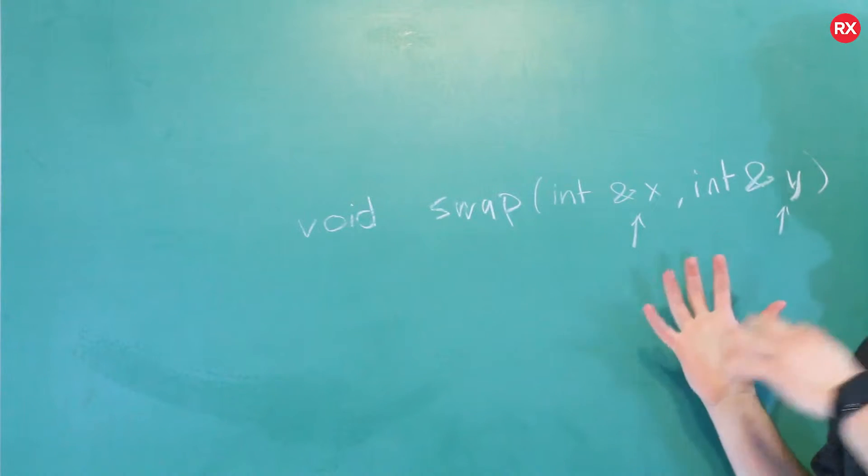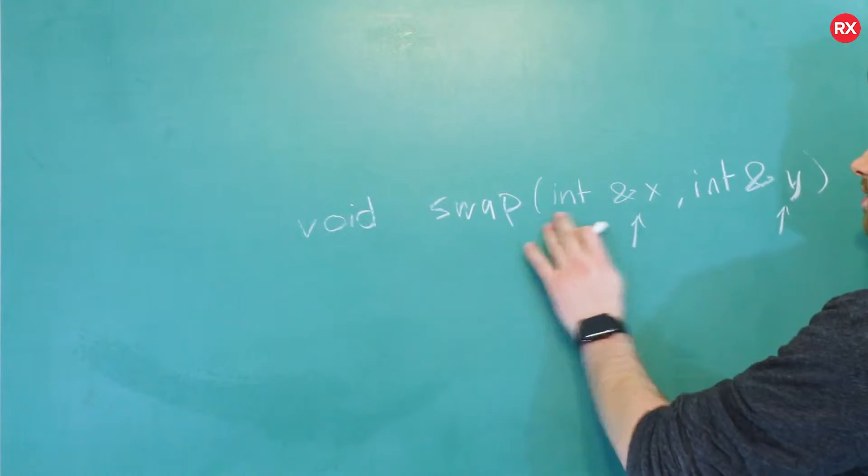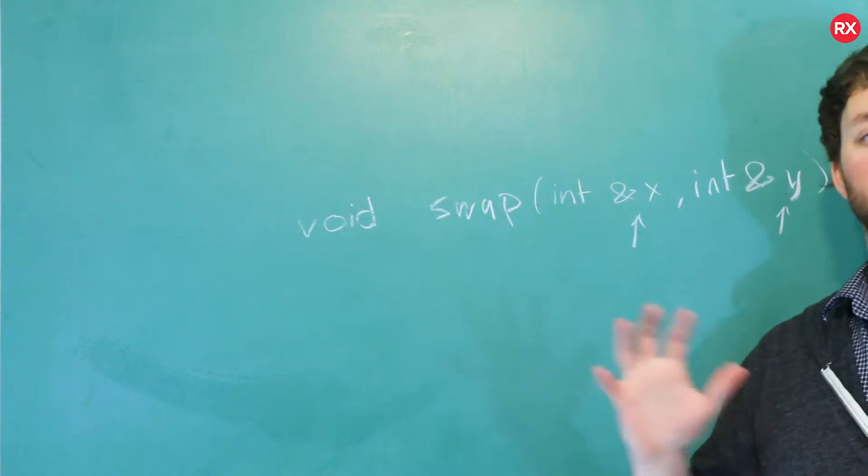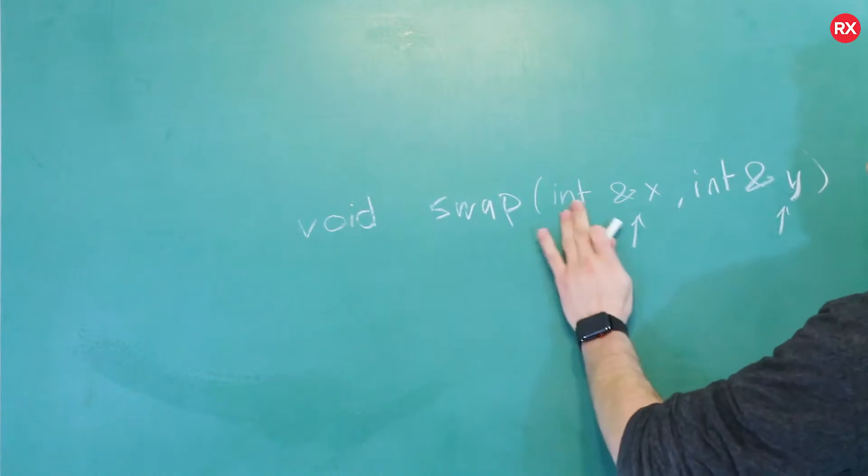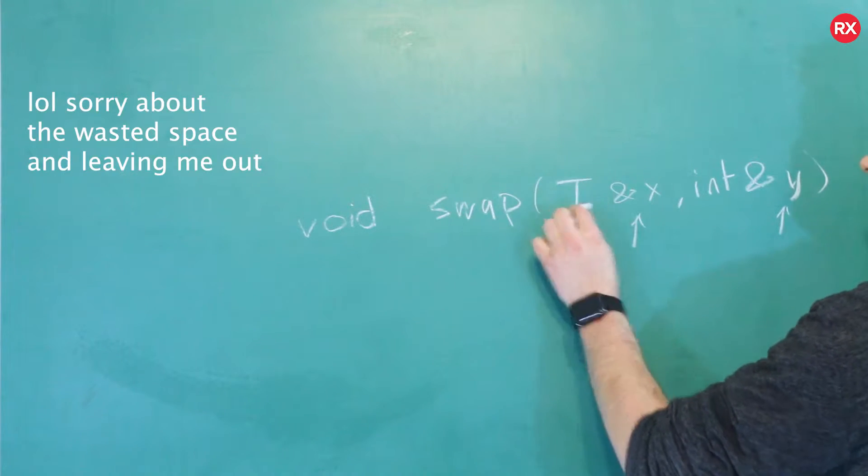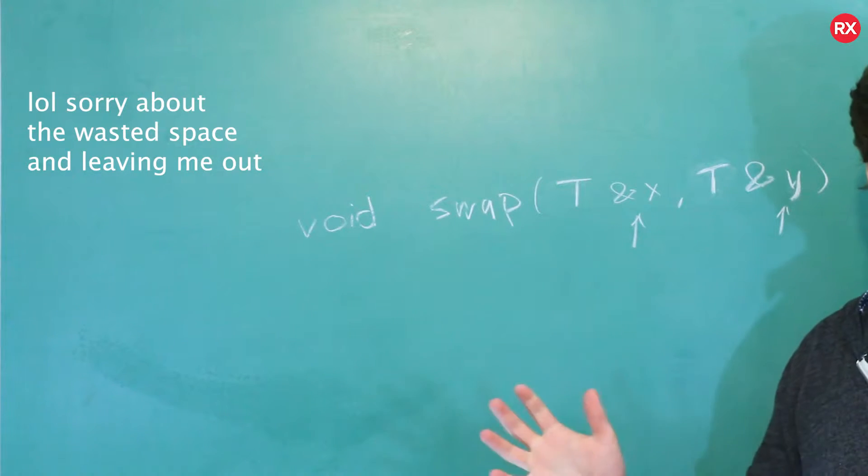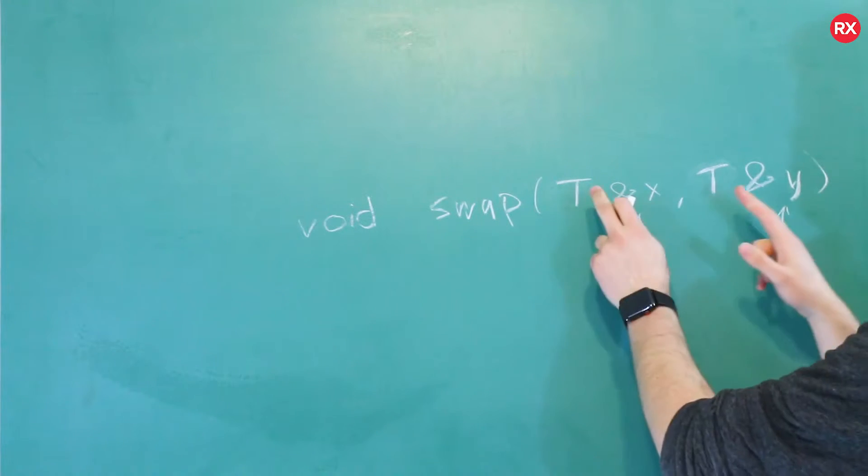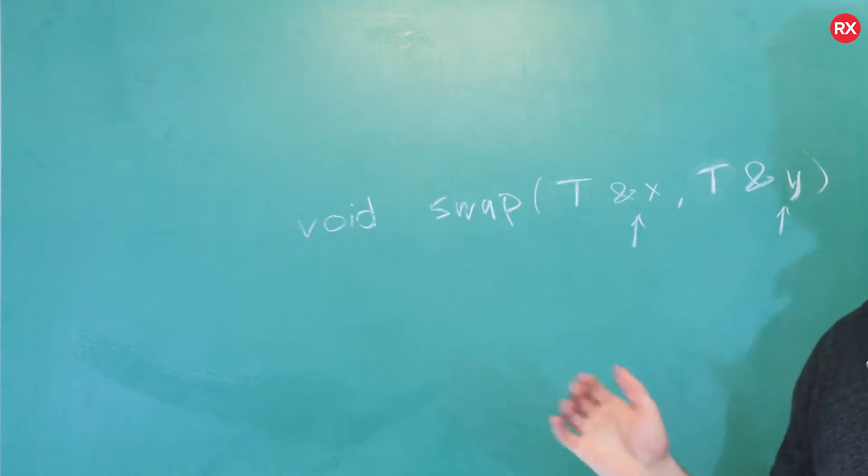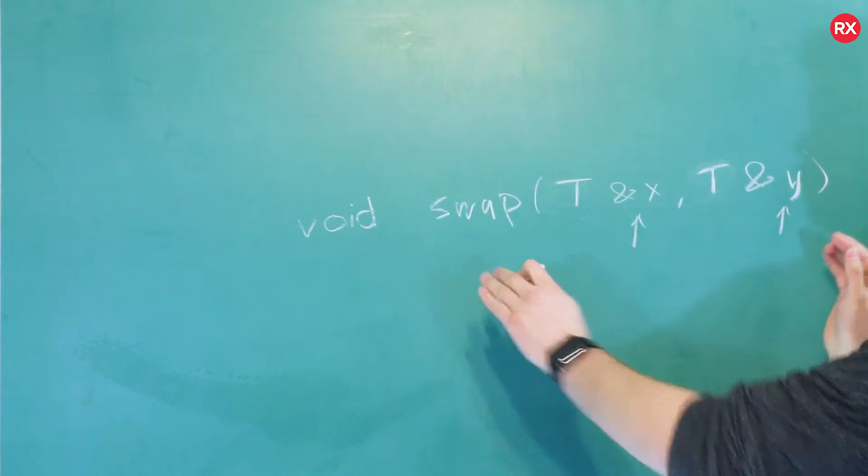But what if we could create a version of this function that did not specify the type, but was more generic? Instead of saying int, we just said T. And this T is basically a placeholder for any type, doesn't matter what the type is, as long as this type and this type is the same. Well, that my friends, is where the concept of templatizing comes in. We basically made a template for this function.